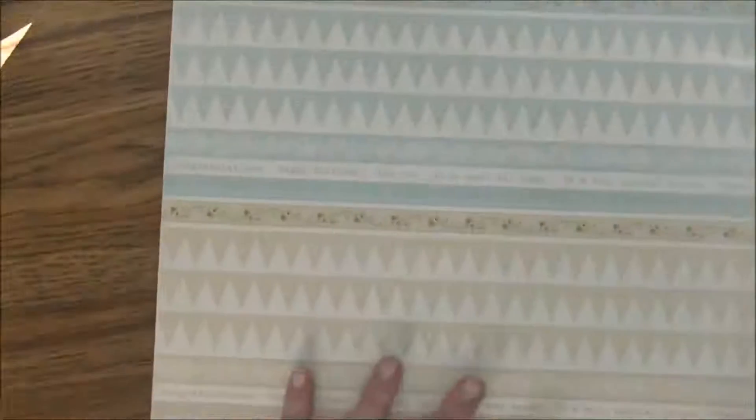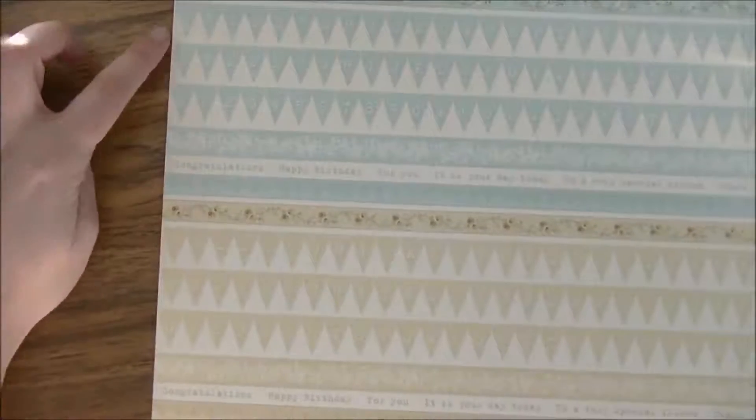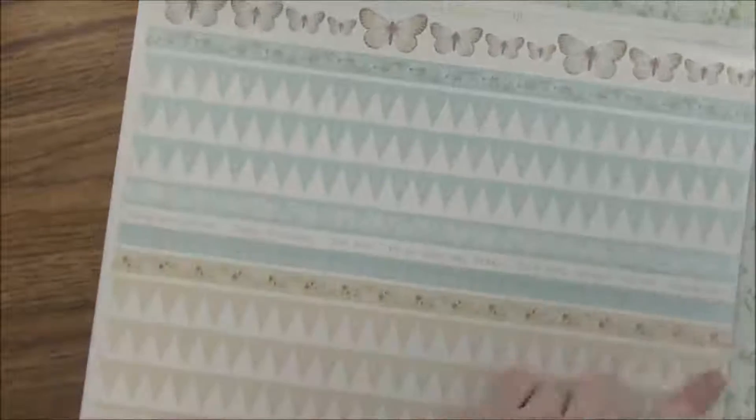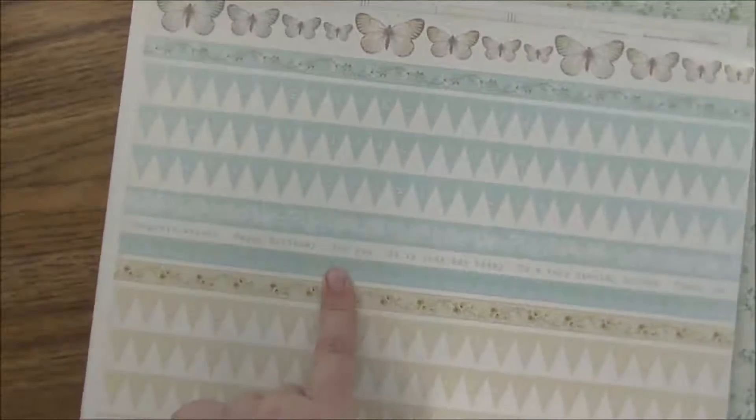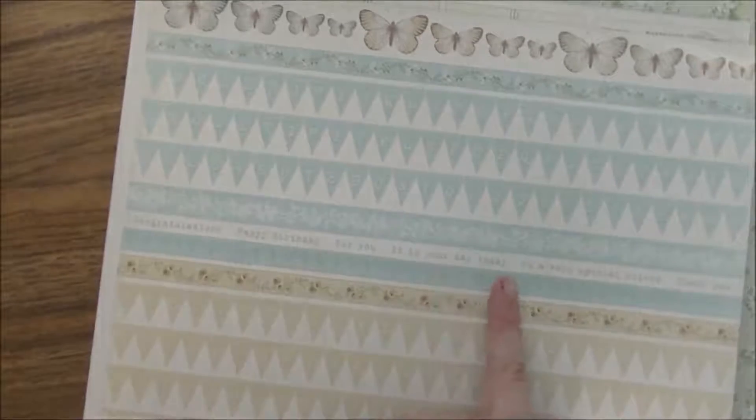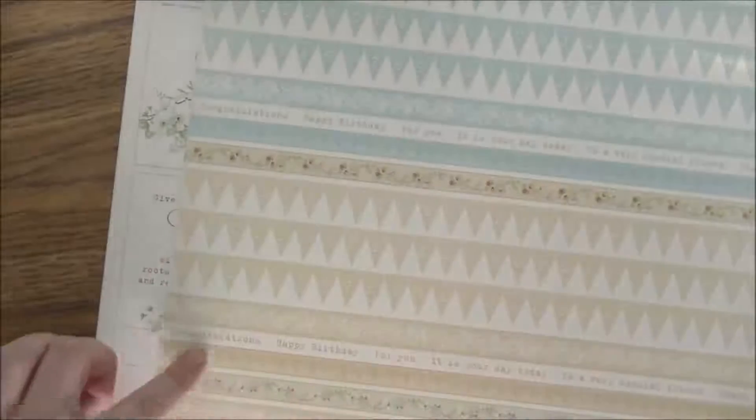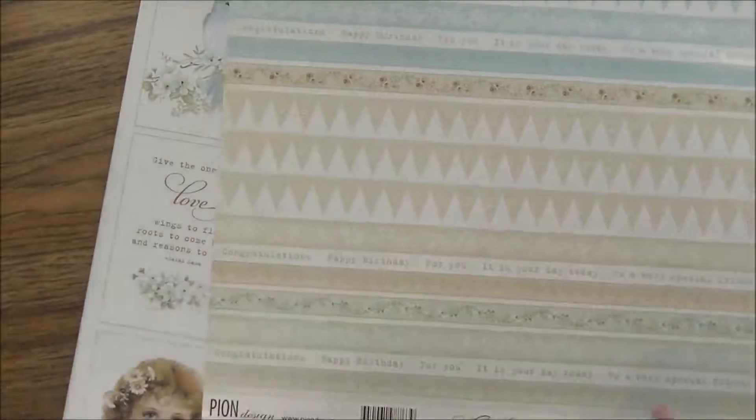Then we have this one - you could cut all these apart for the letters you want. It's just a little bunting with all the letters of the alphabet twice, then you got numbers, congratulations, happy birthday, for you, it's your day, today to a very special friend, and thank you. There's a row of butterflies and then a row of marigolds and it repeats all of that stuff with a little bit of green at the bottom.